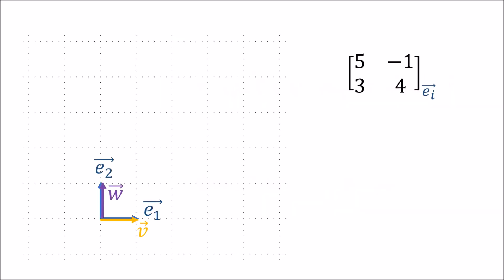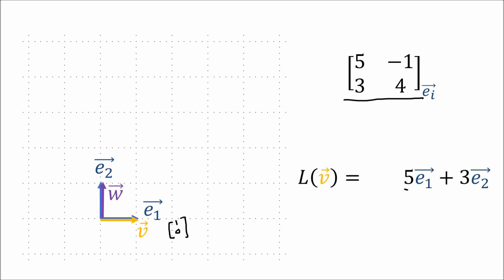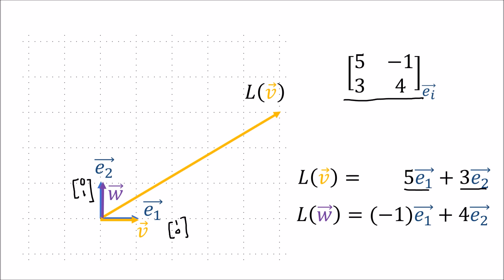Let's look at that visually. We have a basis E1, E2, and vectors V and W which are like copies of the basis vectors. With a matrix whose first column is 5-3 and second column is negative 1-4, the vector V maps to 5E1 plus 3E2, and W maps to negative 1E1 plus 4E2. Note that the basis vectors haven't moved — we're still measuring the output vectors with the same basis.